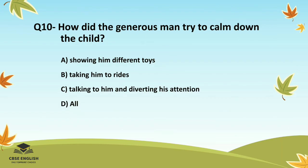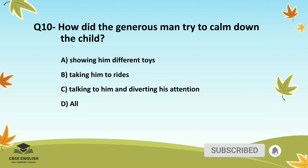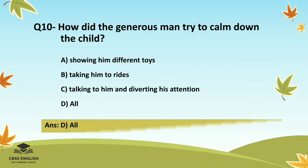Question number ten: How did the generous man try to calm down the child? Options are: showing him different toys; taking him to rides; talking to him and diverting his attention; or all. The correct answer is all.